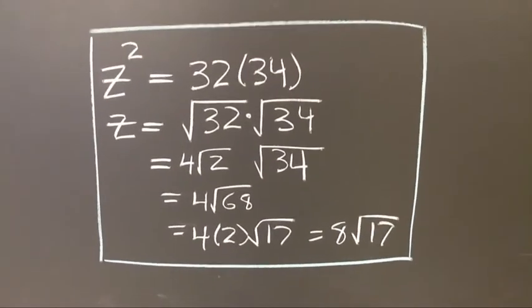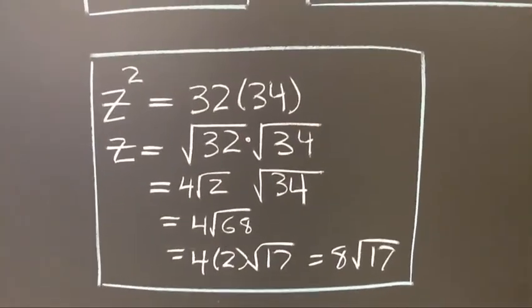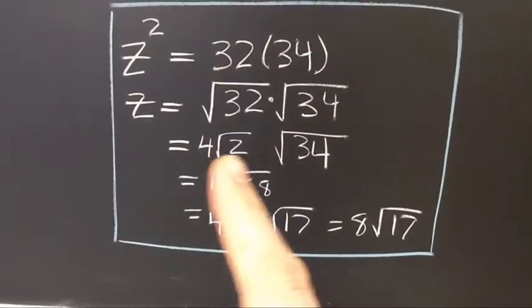Now 32 is 16 times 2, and the square root of 16 is 4. So that reduces to 4 square roots of 2.